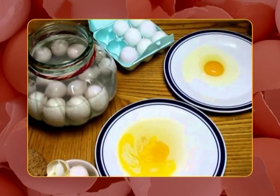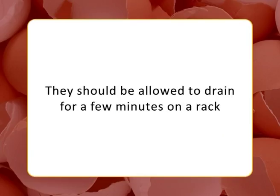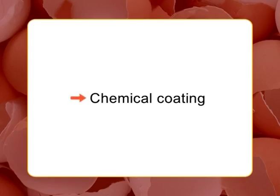The temperature of the oil should be in the range of 15 to 30°C for ideal results. Eggs should be allowed to drain for a few minutes on a rack. They are placed in cases with the small end down to protect the air cell in the large end. The next method is chemical coating.